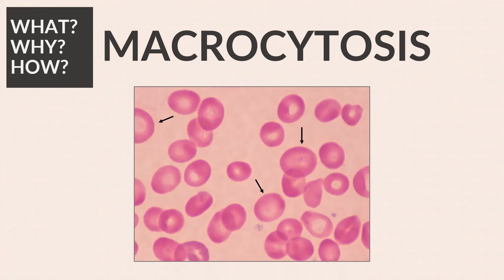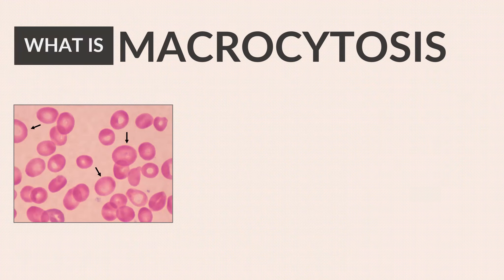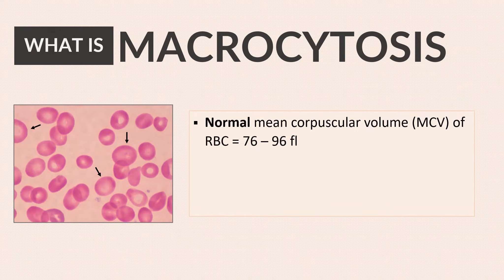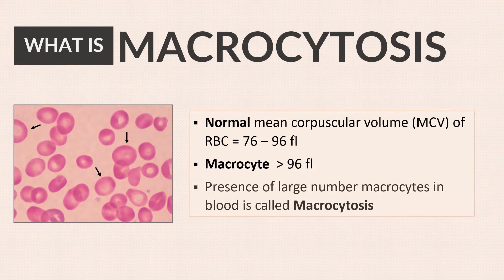In this short video, we will quickly review macrocytosis. What are macrocytes? The normal mean corpuscular volume, or MCV, of a red blood cell ranges from 76 to 96 femtoliters. When the MCV of an RBC is more than 96 femtoliters, it is called a macrocyte. The presence of a large number of such cells in blood is called macrocytosis.